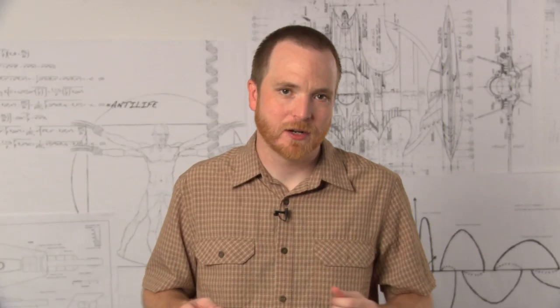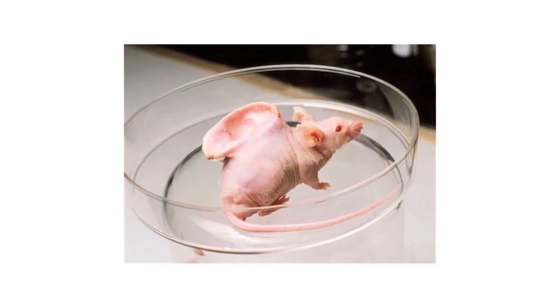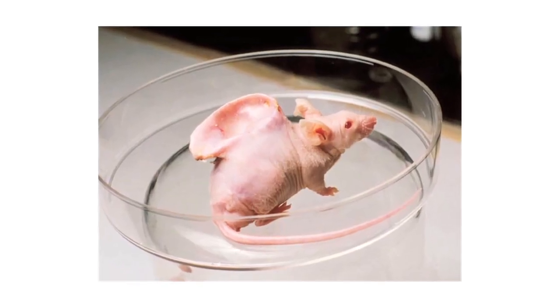It would be easier if we could make the organ and not have to deal with the rest of the person. I'm sure that's what Robert Langer and Joseph Vacante were thinking in 1997 when they grew a human ear on the back of a mouse. A lot of people got freaked out by this because they thought the mouse had been genetically modified to grow the ear from itself. In reality, it was simpler than that.